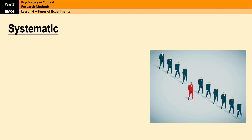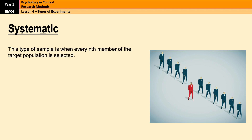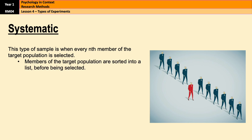Next we have systematic sampling. In systematic sampling the researchers first produce a sampling frame, which is a list of people in the target population organised, for example, alphabetically, and then every nth member of the target population is selected. So for example every third house on a street, or every seventh pupil on the register.